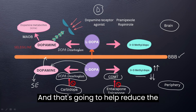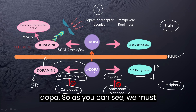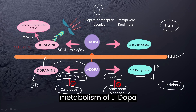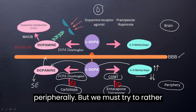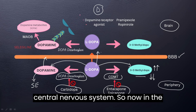This is going to help reduce the peripheral degradation or metabolism of L-dopa. So as you can see, we must make every effort to prevent the metabolism of L-dopa peripherally and rather get L-dopa across the membrane into the central nervous system.